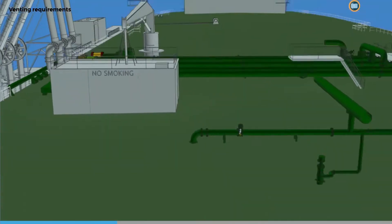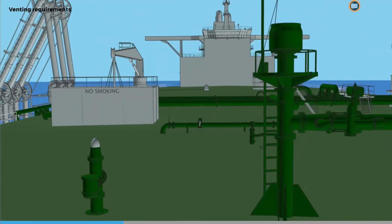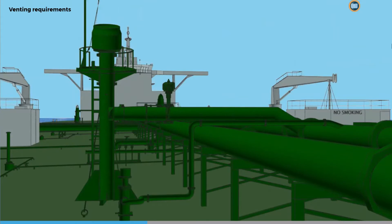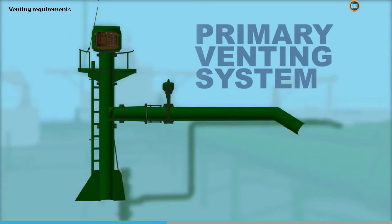It's important for the officer conducting loading operations to be aware of the capability of the primary and secondary venting system during loading. Crude oil tankers are generally designed to vent cargo vapors during loading through a mast riser. This is a primary venting system.